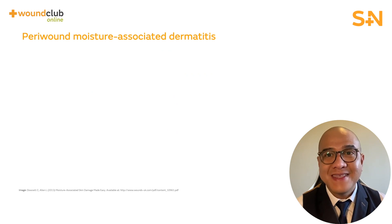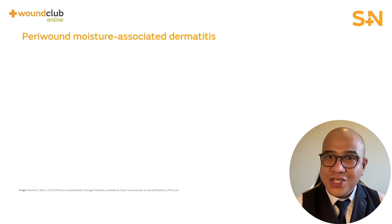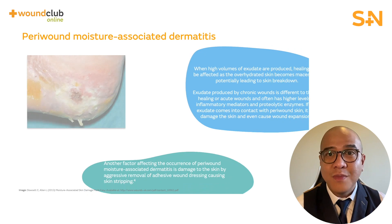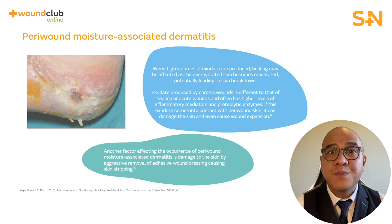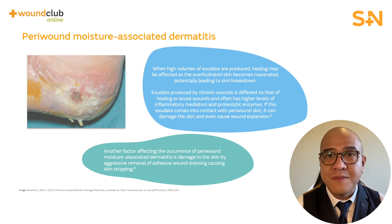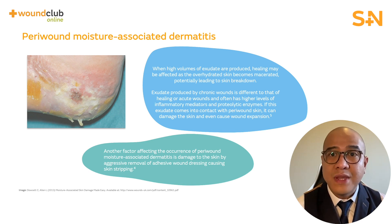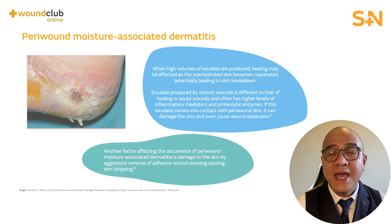The third type of MASD is peri-wound moisture-associated dermatitis. It is generally caused by a wound producing a high volume of exudate, causing over-hydration of the skin and leading to maceration. It is also worth knowing that wound exudate contains proteolytic enzymes, with exudate from chronic wounds having a much higher level of these enzymes, and its contact with peri-wound skin can damage the skin and may even cause wound expansion. Another contributing factor is aggressive removal of adhesive wound dressings, causing skin stripping.